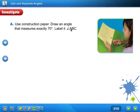Label it angle ABC. So if you can see, she drew an angle that's exactly 70 degrees, which would be an acute angle, and she has labeled it ABC. So that's what you're going to need to do.